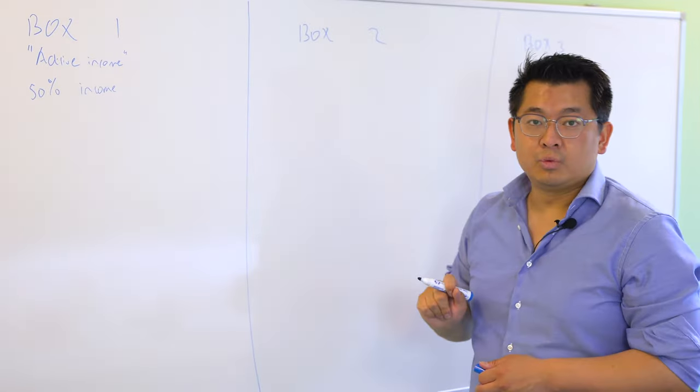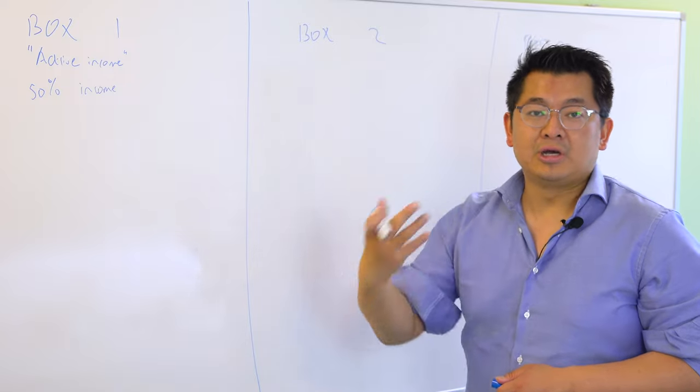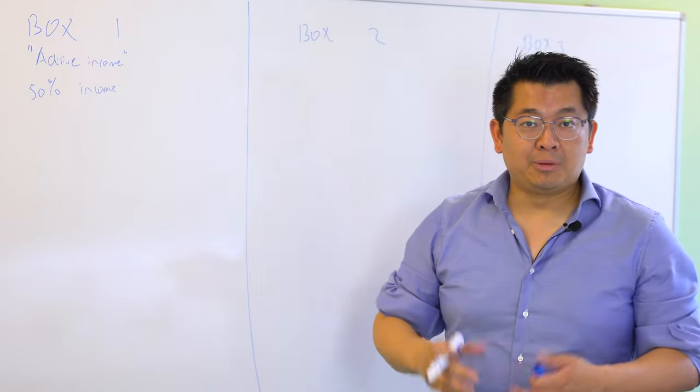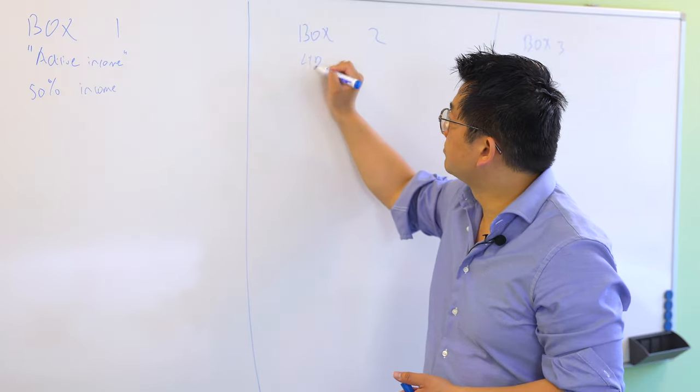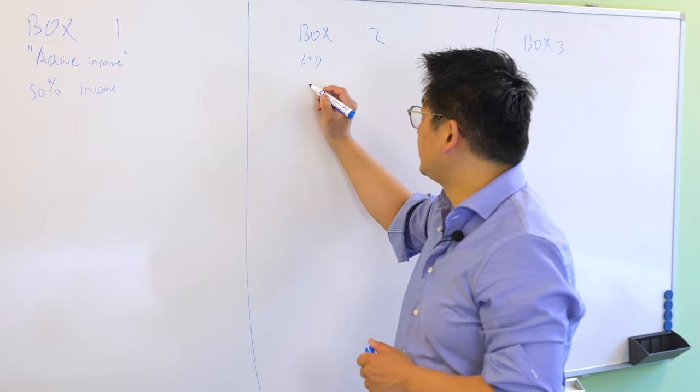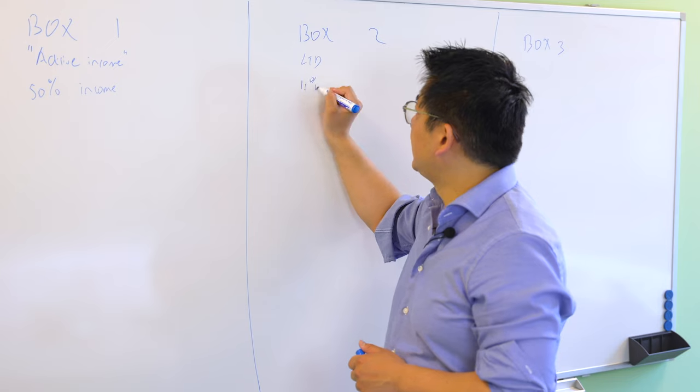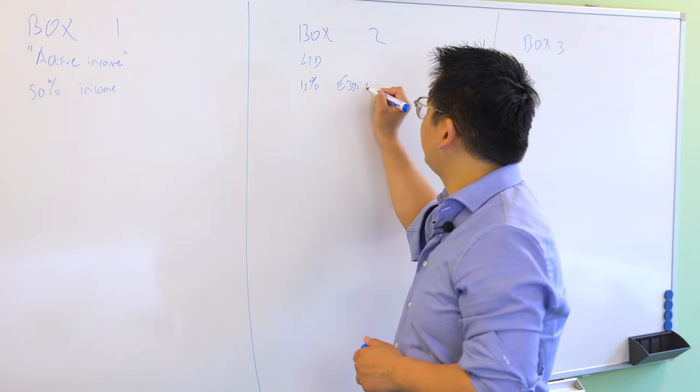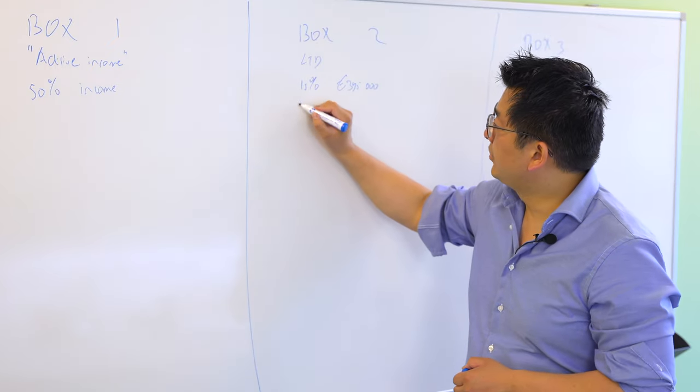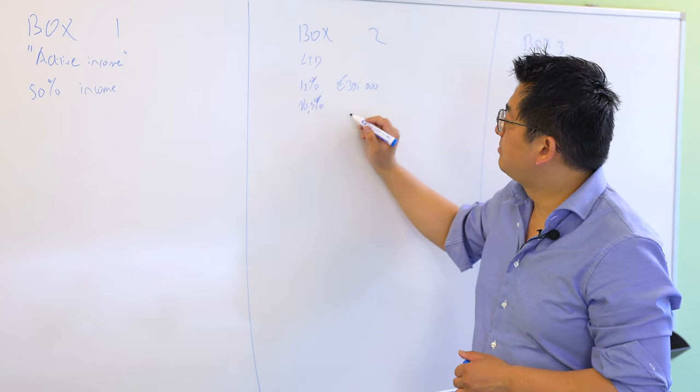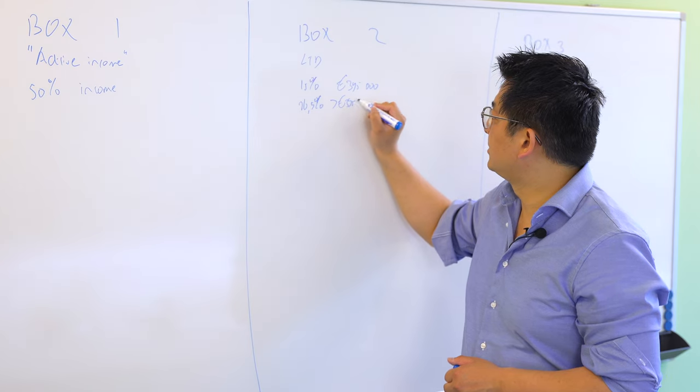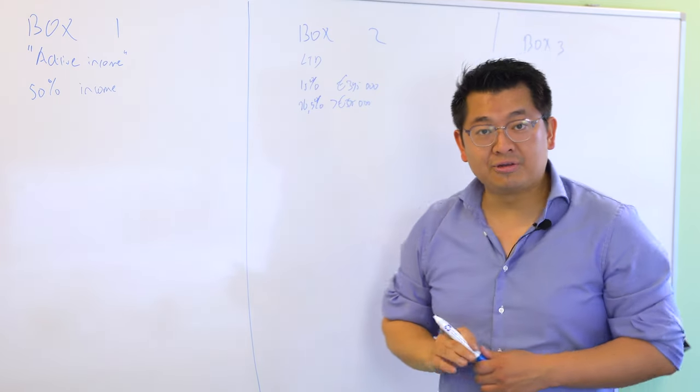Then we have box two, which is that you have a stake or shares in a company. If you own a company, like a limited liability corporation, you will actually be charged this year in 2022 about 15% up to 395,000 euros profit, and above that number you'll be charged 26.9% profit tax.